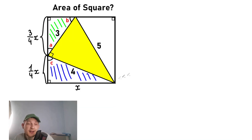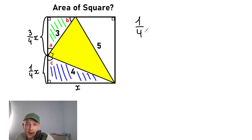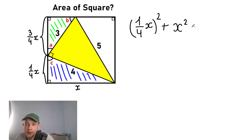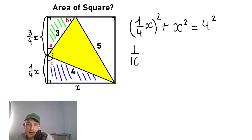This is the last step. Let's consider the bottom triangle and apply our Pythagorean theorem. The first leg squared is (1/4 · X)², plus the second leg squared X², equals the hypotenuse squared, which is 4² = 16. Raising (1/4)X to the second power gives (1/16)X², so we have (1/16)X² plus X² equals 16.